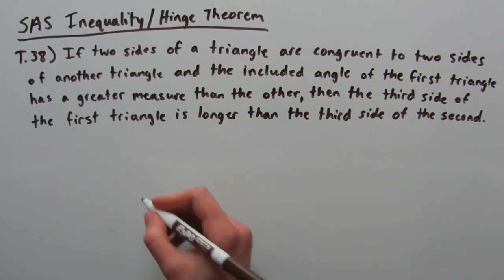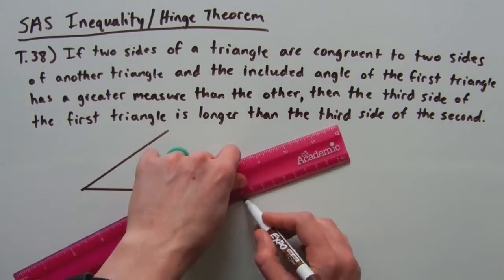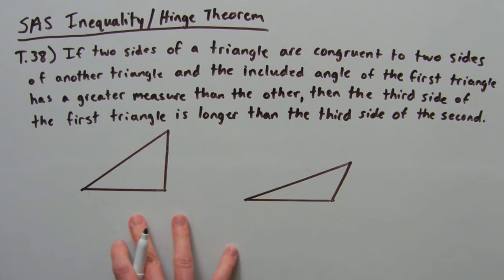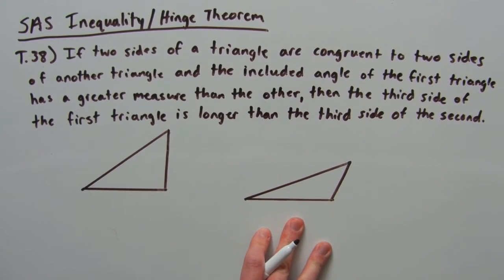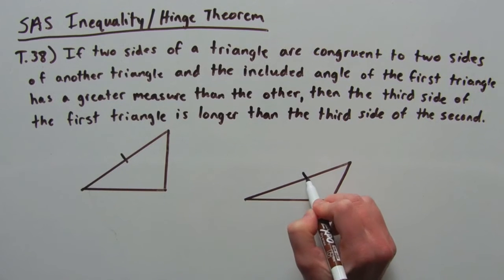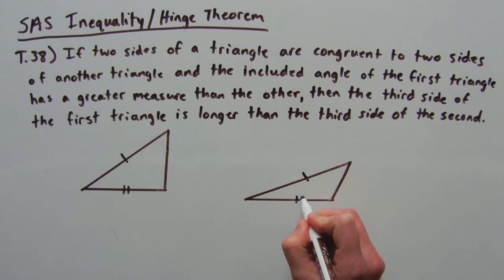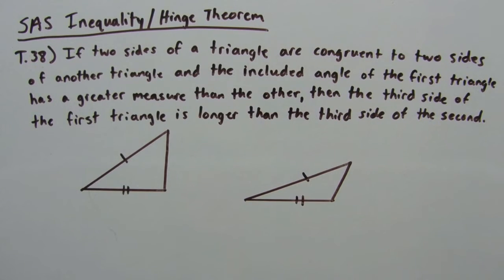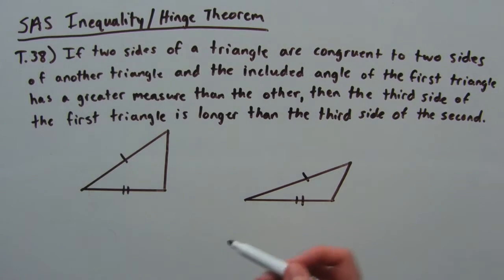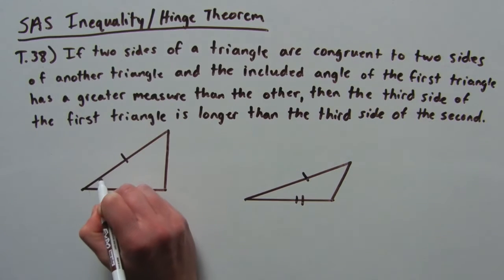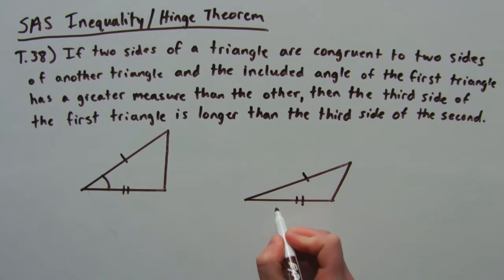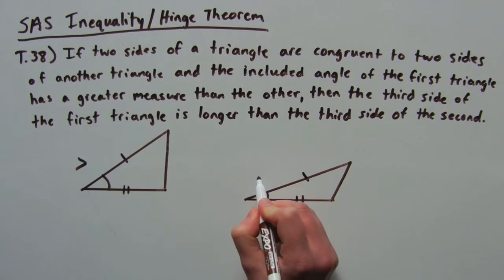Let me explain this theorem using a picture. Here I have two separate triangles. This side is congruent to this side, and this side is congruent to this side, and I know that because I measured it out when I drew the triangles. So this theorem says, since these two sides are congruent to two other sides on another triangle, this angle in the first triangle is clearly greater than in the second triangle. So this has the bigger angle, and this has the smaller angle.